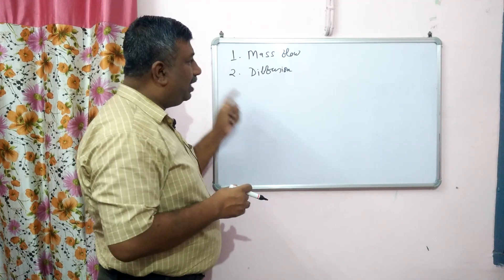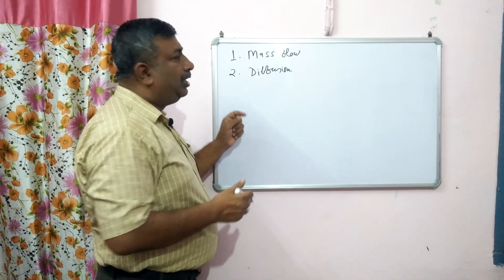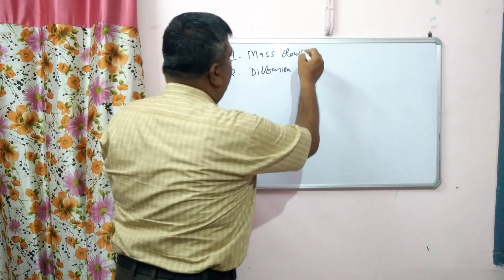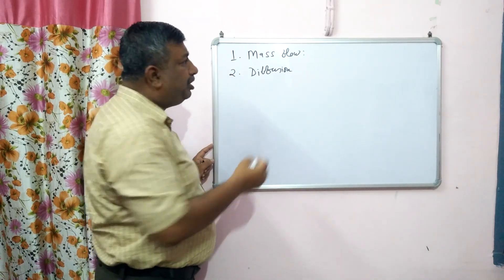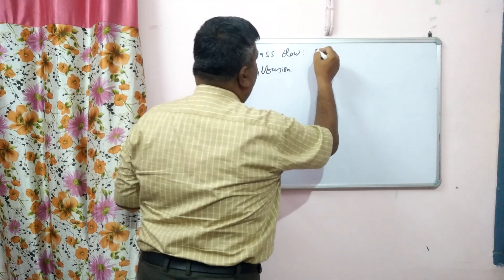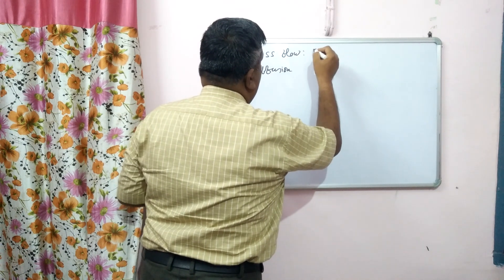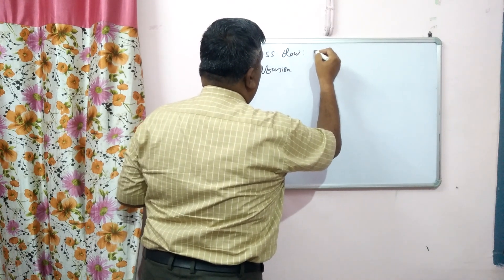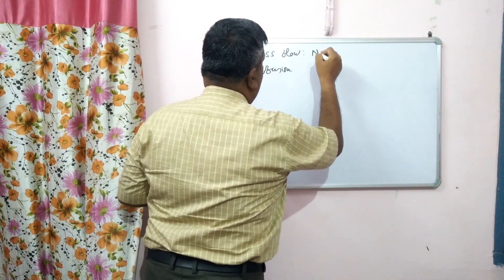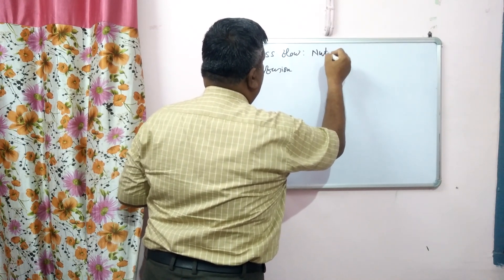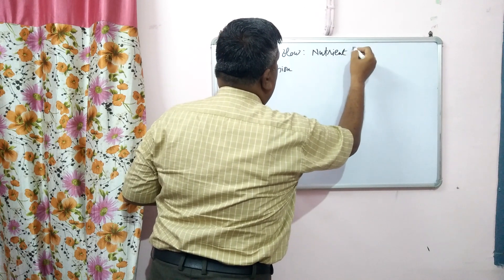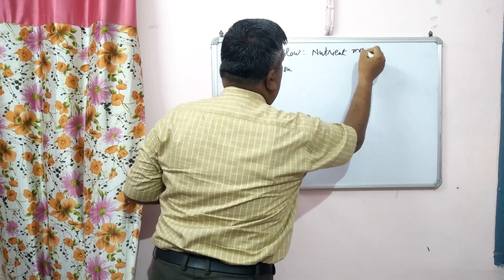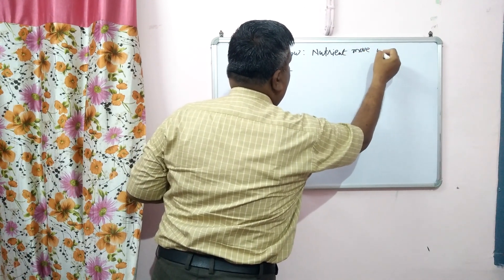The major pathways are mass flow and diffusion. In the case of mass flow, nutrients move along with water — nutrient movement means nutrients move with water.